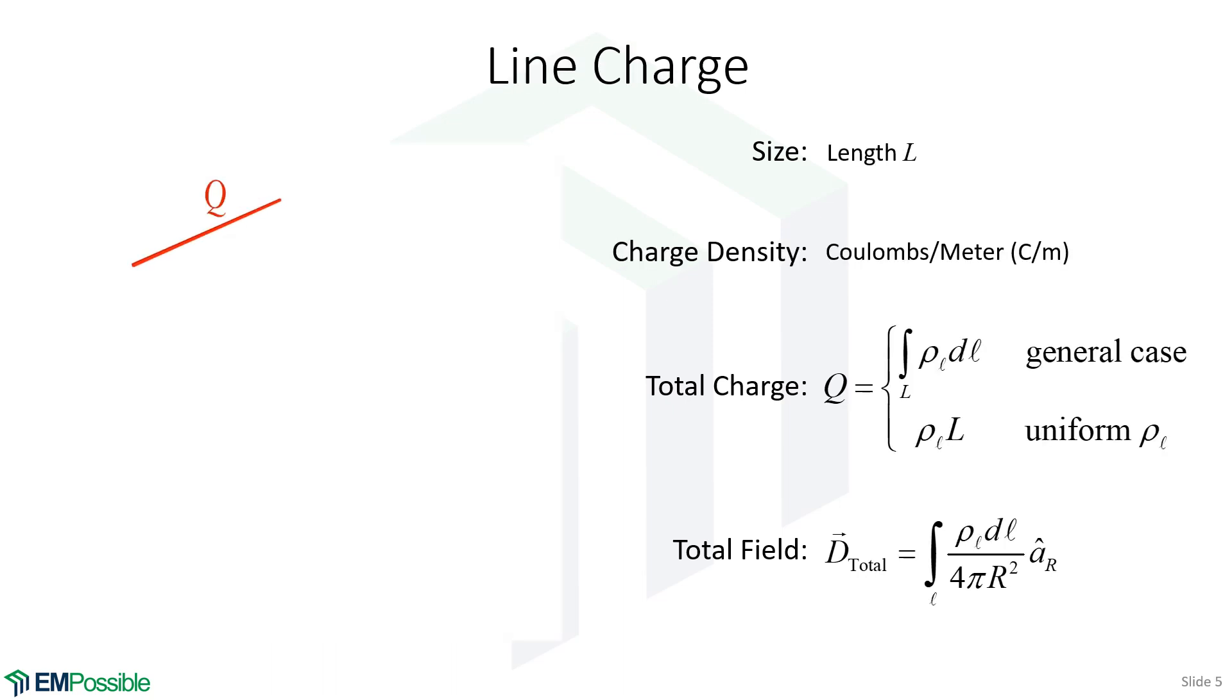The next is a line charge. You can imagine starting with a point charge and extruding that along one dimension. The total length might be L. Since there's now a line, it makes sense to talk about a charge density.